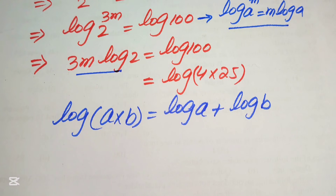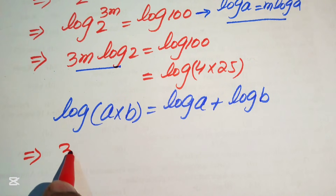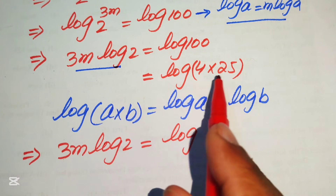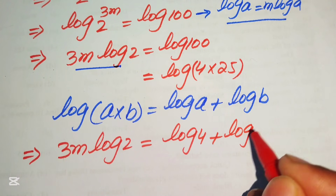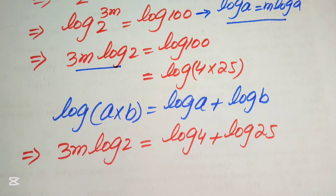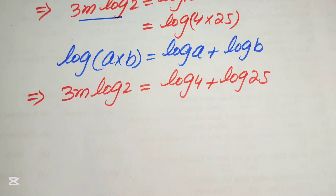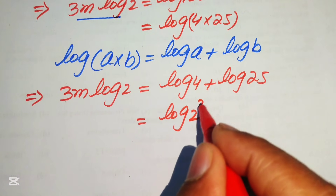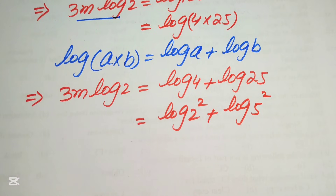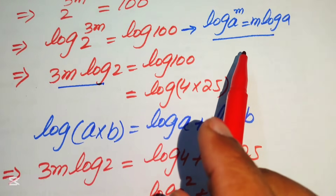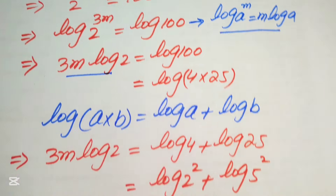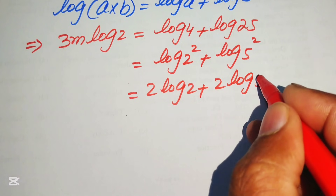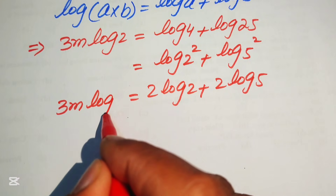So the right-hand side becomes log of 4 plus log of 25. We write 4 as 2 squared and 25 as 5 squared. Applying the log power property again, we move the exponents to the front, giving 2 times log 2 plus 2 times log 5. The left-hand side remains 3m times log 2.